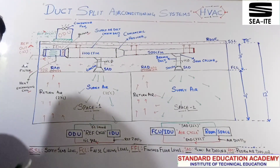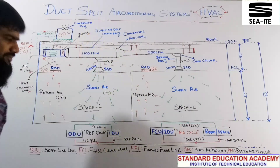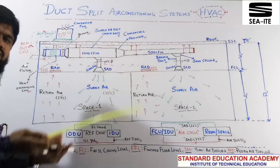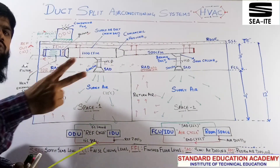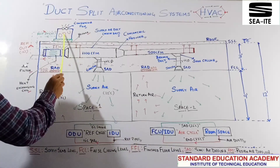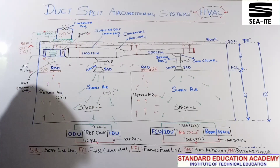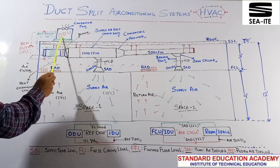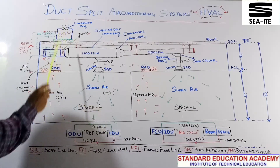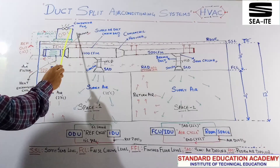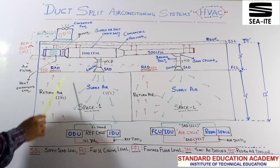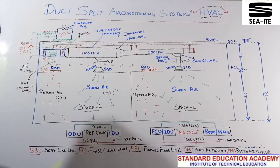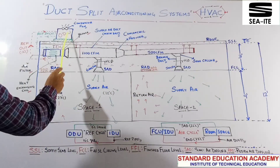By the name itself it says it is a split AC. Split AC is nothing but splitting the refrigeration cycle components into two different parts — one is outdoor unit, other is indoor unit. In your outdoor unit you will find compressor, condenser, accumulator, blower, these are the things with heat exchanging coil, that is condenser coil, in outdoor unit.